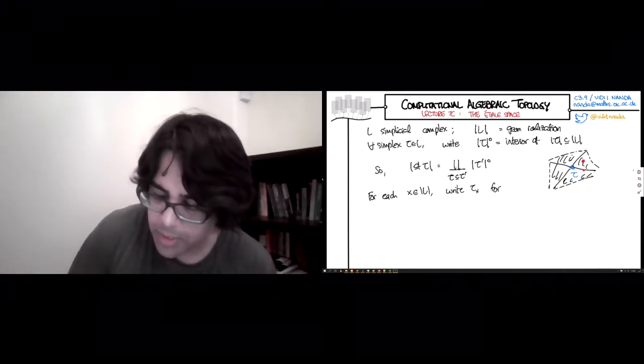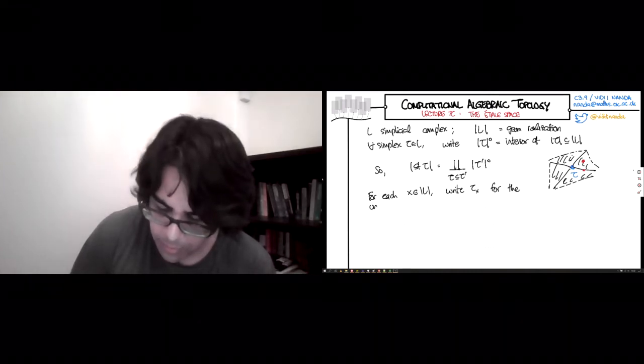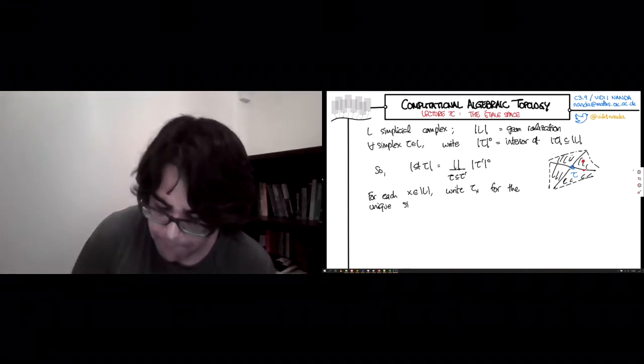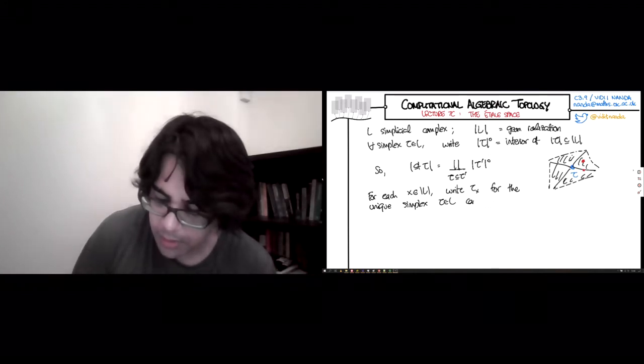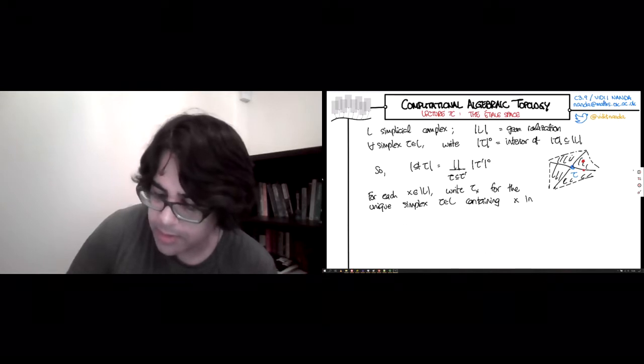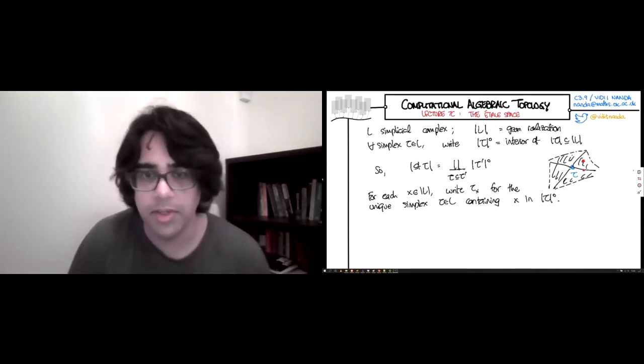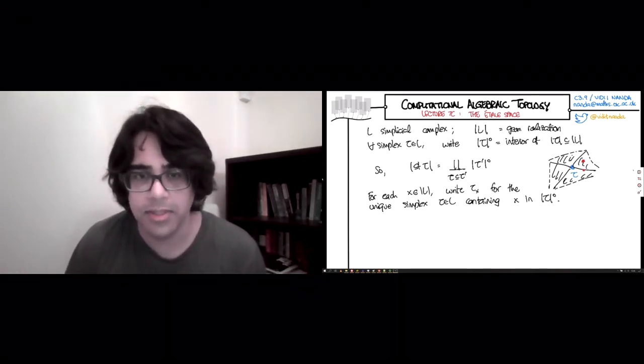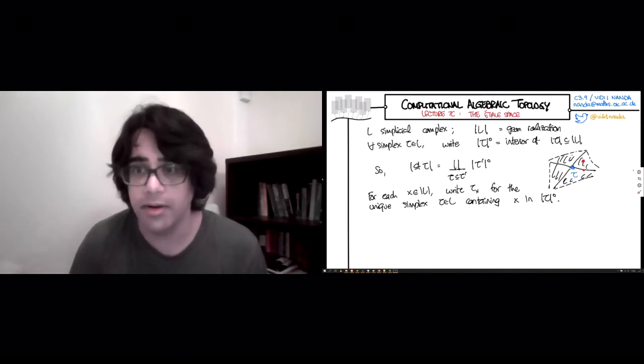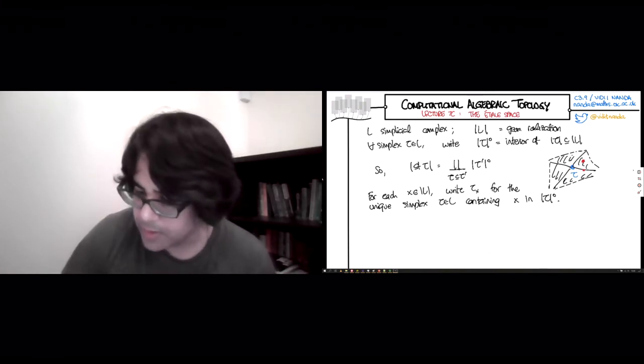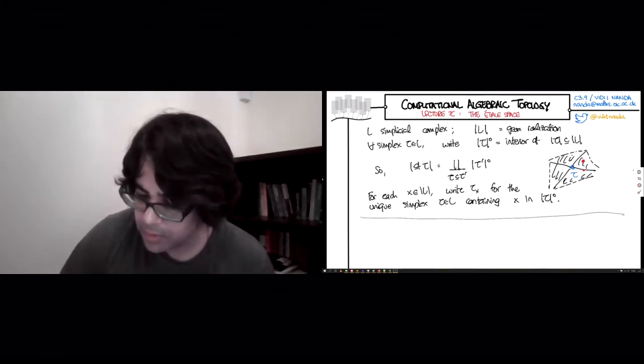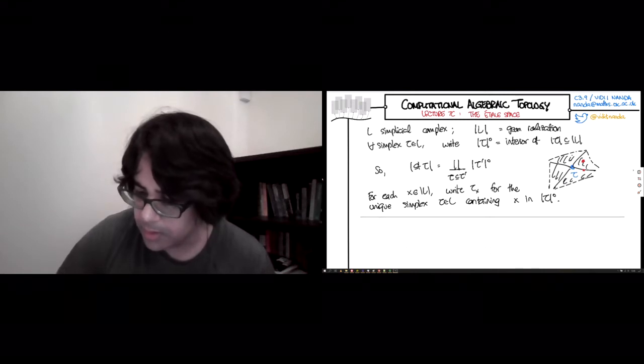And so for each point in this geometric realization, we will write tau sub x for the unique simplex tau in L containing x in its interior. Because it's a disjoint union, there's going to be a single one whose interior contains the point x. So these were all old facts. I mean, there's no sheaf here yet. So let's just leave that on the side.